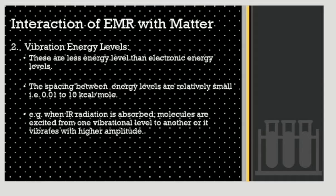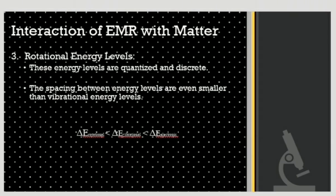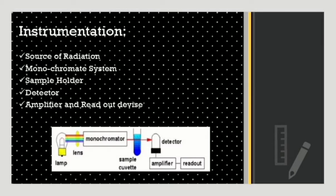The next point is vibrational energy levels. These have less energy than electronic energy levels and the spacing between energy levels is relatively small, for instance 0.01 to 10 kcal per mole. When infrared radiation is absorbed, molecules are excited from one vibrational level to another and vibrate with higher amplitude. The last point is rotational energy levels. These are quantized and discrete, with spacing even smaller than vibrational energy levels — the least energy level of the interaction of EMR with matter.